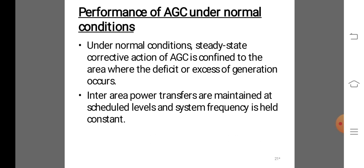Under normal conditions, steady-state corrective action of AGC is confined to the area where the deficit or excess of generation occurs. The load frequency control system possesses an inherent steady-state error for step input. Applying the usual procedure, the dynamic response of the control loop can be evaluated to observe the initial response for any overshoot.